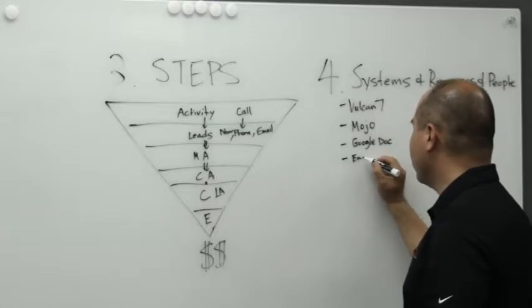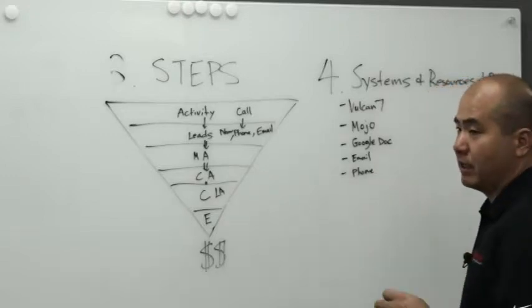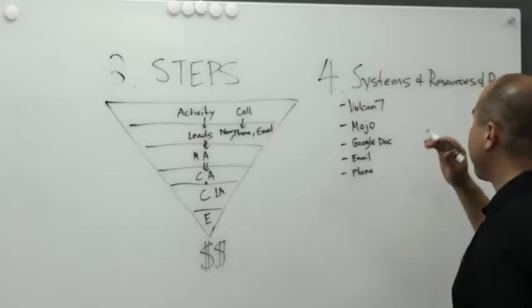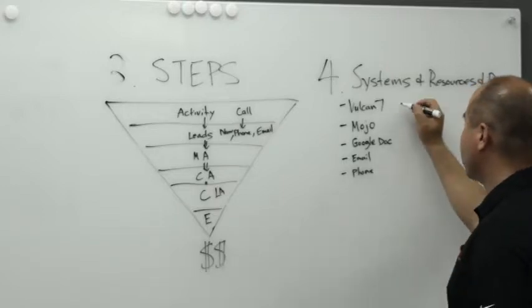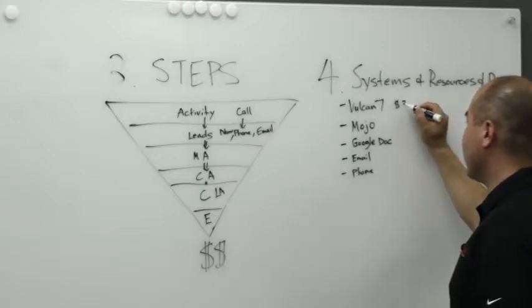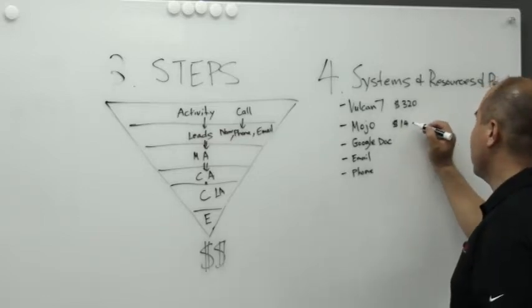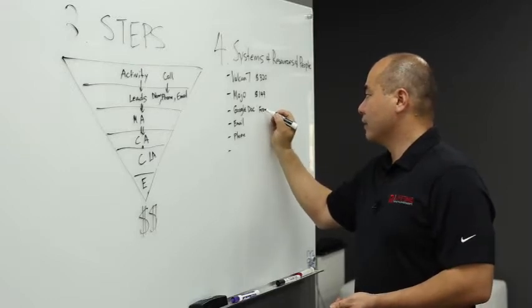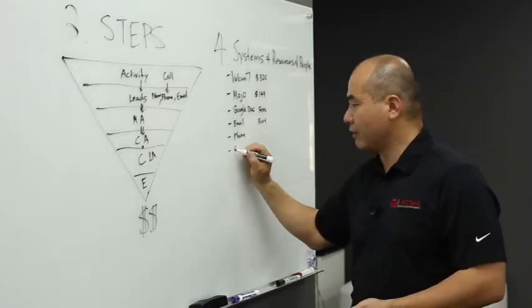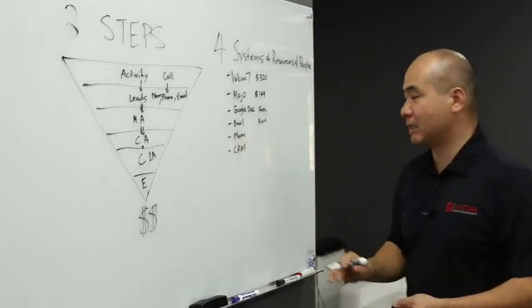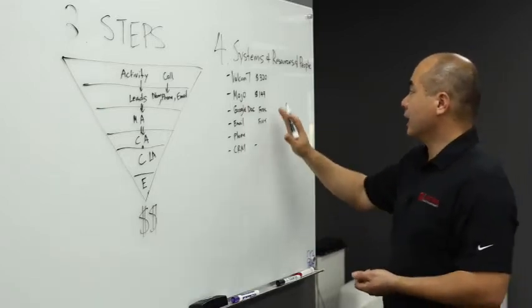We will have email. We will have phone. And you start writing down the systems that you need to generate predictable results with using expired and for sell by owner. So next step is resources. So these items here, we have to identify the cost associated. So Vulcan 7 is, I believe, around $320 a month. Mojo, single line or triple line dialer is about $140. And Google Doc is free. And email is free. Phone, you pay your phone provider. And then you also have CRM, a client relation management system that's going to, so this can be there's various versions from free to all the way to a couple hundred dollars a month. So then you come up with the resources.